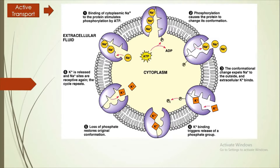At the same time, potassium will bind to the transport protein. The binding of potassium to the transport protein will release the phosphate group that had been attached before. This will allow the potassium to be transported inside the cell. Then the process will continue for the sodium-potassium pump.